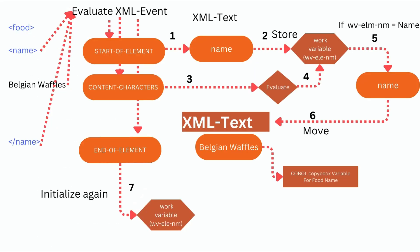Workflow: we have depicted a sample workflow for a better understanding of the XML PARSE operation. Each fragment will trigger an event. The name tag will trigger the start-of-element event. We will move the XML-TEXT of this event to a working storage variable. The content following the element start tag will trigger the content-characters event. We will evaluate the working storage variable, and if its value is 'name', we will move the content-characters XML-TEXT to the equivalent COBOL copybook variable for name.